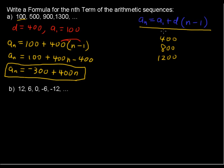So that's why the general form works. Let's use it for this next example. The first term a sub 1 is 12, and the difference is negative this time. In the sequence 12, 6, 0, negative 6, negative 12, we are subtracting 6 every time, so the difference is negative 6.